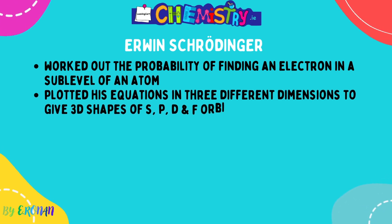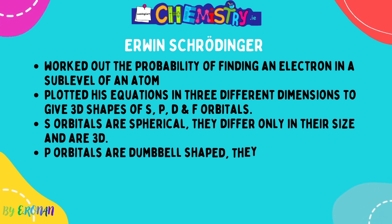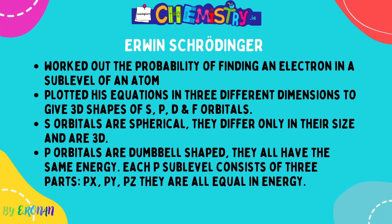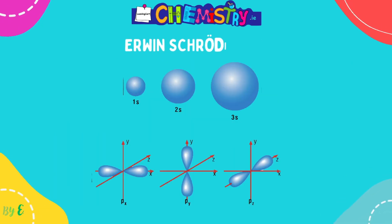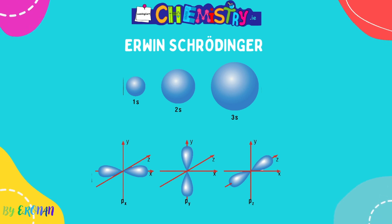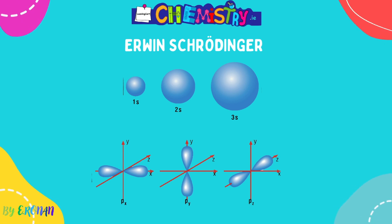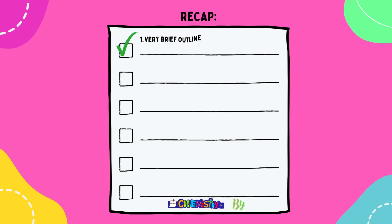Erwin Schrödinger worked out the probability of finding an electron in a sub level of an atom, and plotted equations in three dimensions to give us 3D shapes of s, p, d, and f orbitals. S orbitals are spherical and only differ in size: 1s is smaller than 2s, which is smaller than 3s. P orbitals are dumbbell-shaped, all have the same energy, and are made up of three parts: px, py, and pz — oriented along the x, y, and z axes respectively. You must occupy them singly before filling them in pairs.